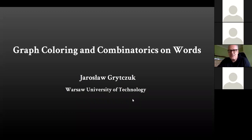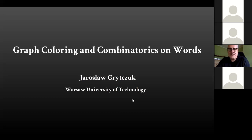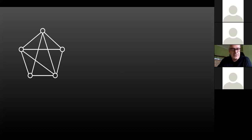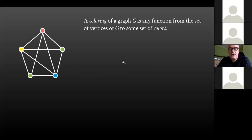Thank you for this nice introduction and for this nice opportunity to have a talk on this seminar. I'm going to say something about some problems between graph coloring and words. I will start with explaining what is graph coloring. So if we have a graph, we can color its vertices. This is the most basic problem in this area. By coloring, I just mean any function from the set of vertices of a graph to some set of colors.